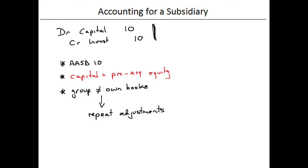Now, the first adjustment that needs to be made we've just looked at, which is the elimination of the investment. But there are a number of other adjustments that can be and will need to be done and that we're going to have a look at in subsequent videos.